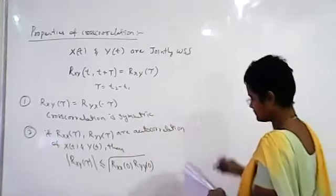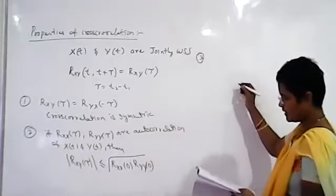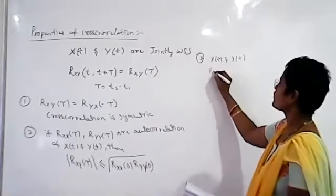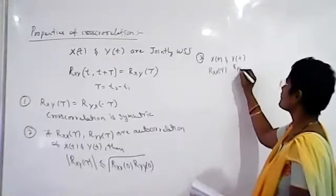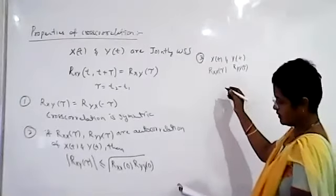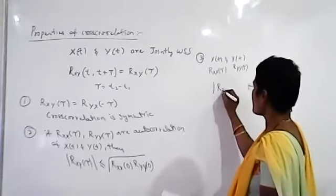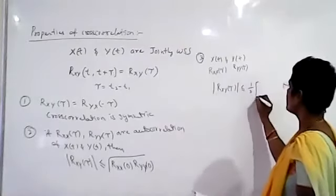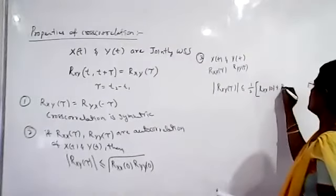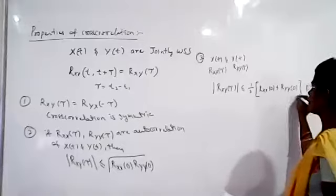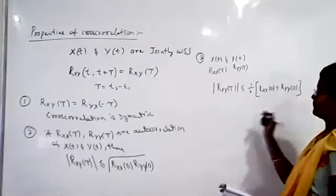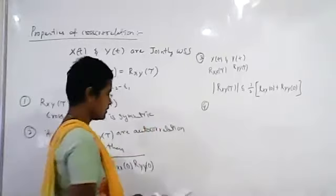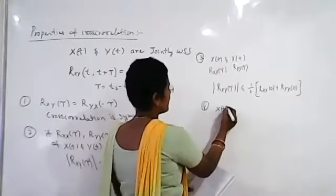The third property is that if x(t) and y(t) are two random processes, then the cross-correlation satisfies the inequality: rxy(τ) is always less than or equal to one-half of [rxx(0) + ryy(0)]. So the cross-correlation will satisfy this inequality.